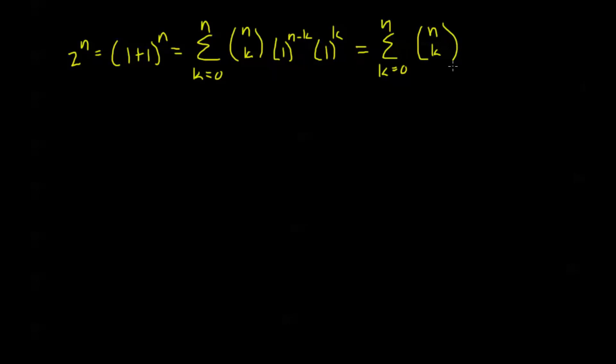Now we have some interesting consequences that I want to talk about. First of all, two to the n, we can write this as one plus one to the n, which by our binomial theorem is k ranging from zero to n of n choose k, one to the n minus k times one to the k. Now this one to the n minus k and one to the k, they're always one, so this is just the sum of all of my binomial coefficients, n choose k, for a particular value of n.